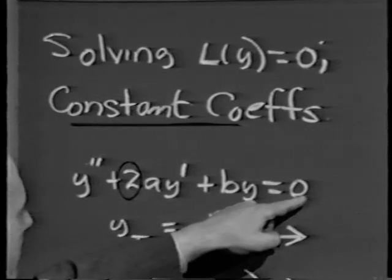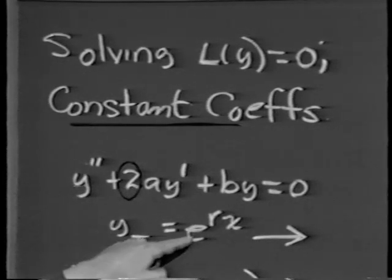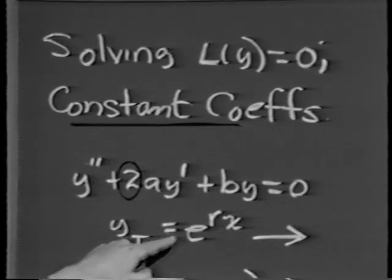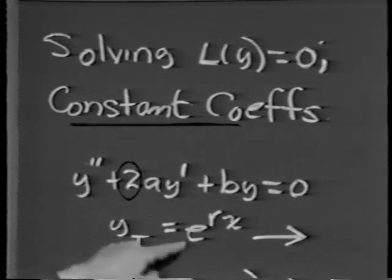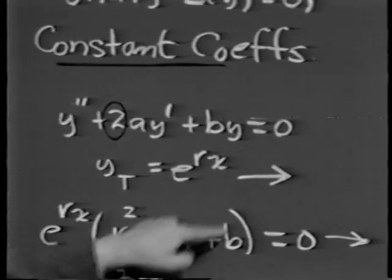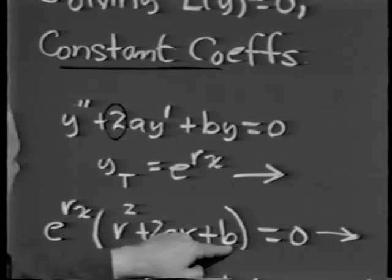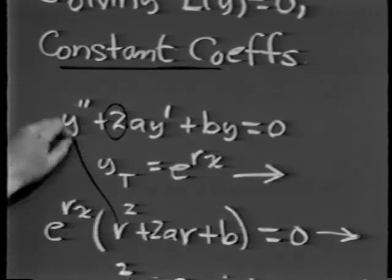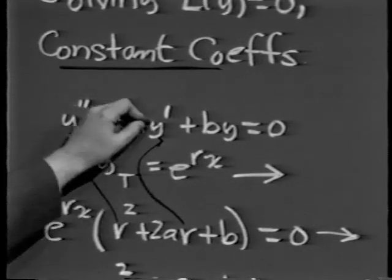To solve an equation of this type where a and b are constants, we try for a solution in the form y equals e to the rx, recalling that when we differentiate this we get r e to the rx, and differentiating a second time we get r squared e to the rx. Substituting this in, e to the rx is a constant factor, and we're left with a polynomial in r equal to r squared plus 2ar plus b.